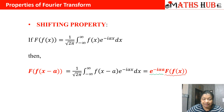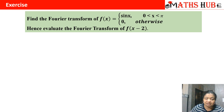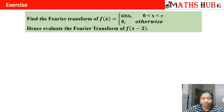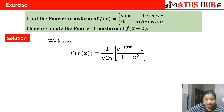Based on this, let us look at a question on the shifting property. Find the Fourier transform of f(x) = sin(x) for 0 < x < π and 0 otherwise, then evaluate the Fourier transform of f(x − 2). We have already calculated the Fourier transform of this function in a previous video. The result is: (1/√(2π)) · (e^(−iαπ) + 1) / (1 − α²).